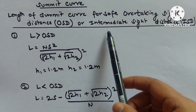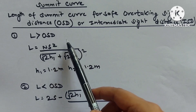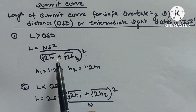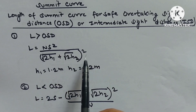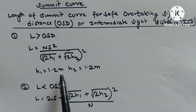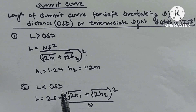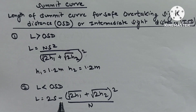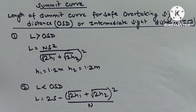For summit curve with safe overtaking sight distance: when L > OSD, L = NS²/(√2H₁ + √2H₂)², with H₁ = H₂ = 1.2 m. When L < OSD, L = 2S − (√2H₁ + √2H₂)²/N, with H₁ = H₂ = 1.2 m.